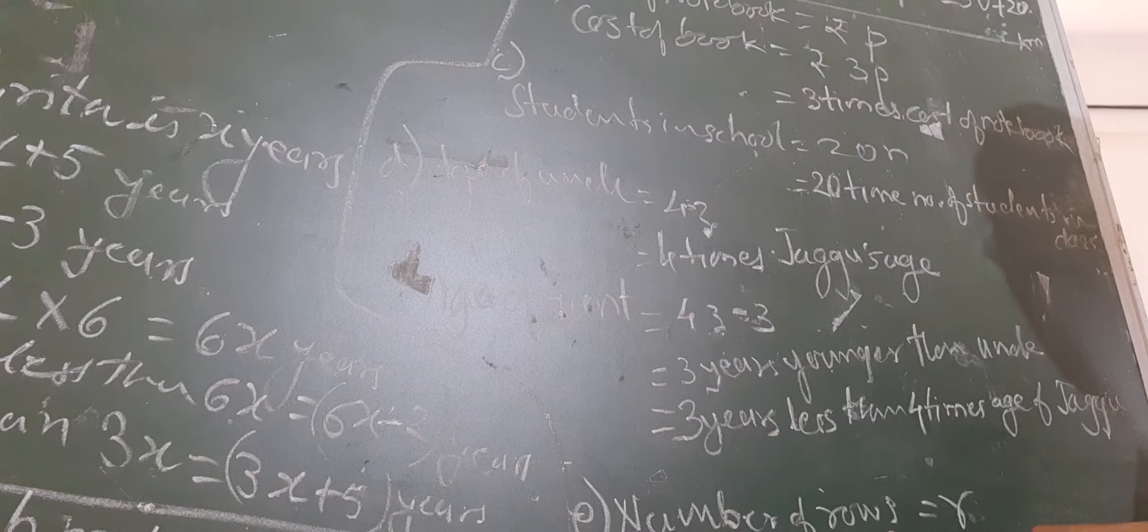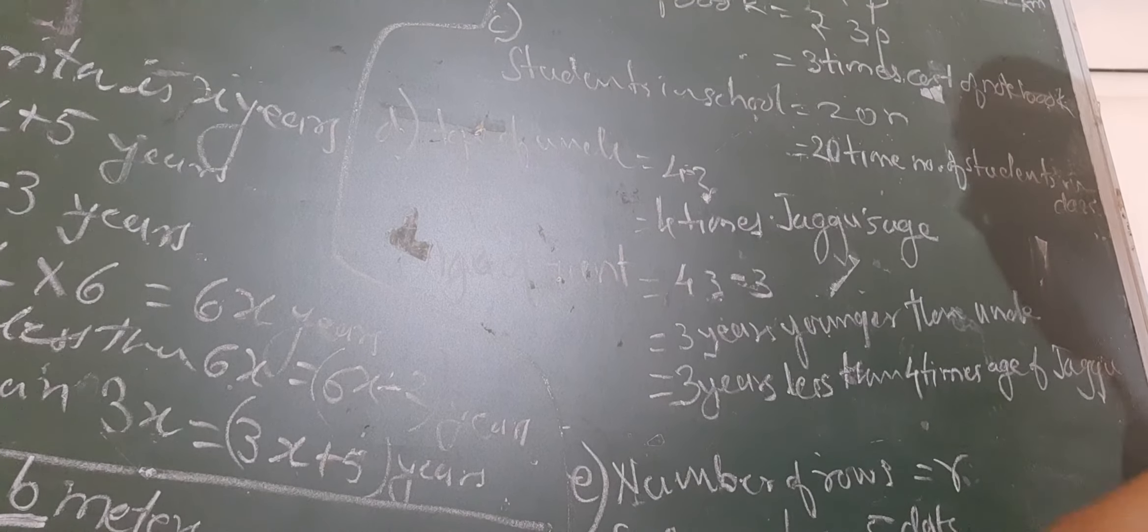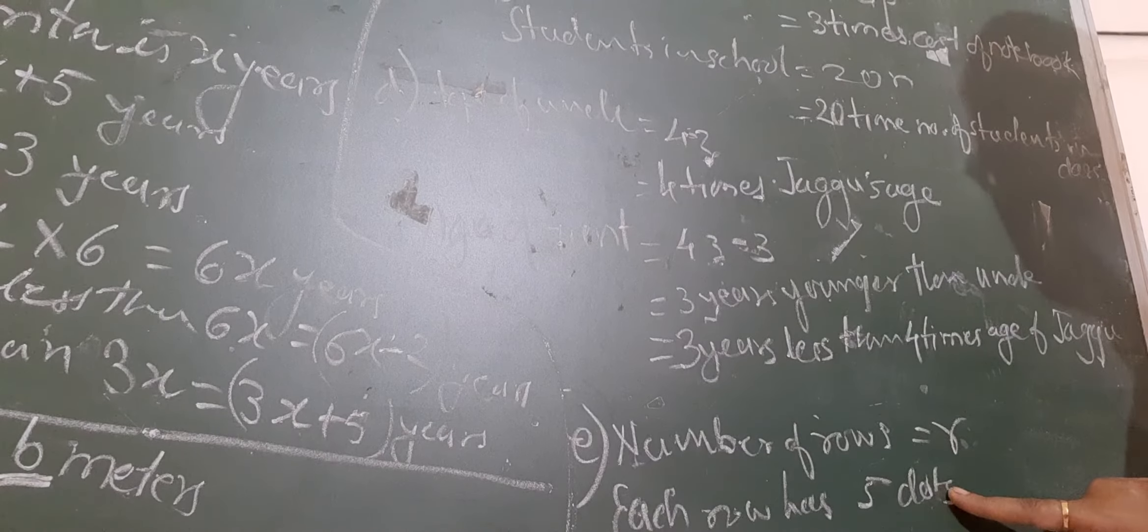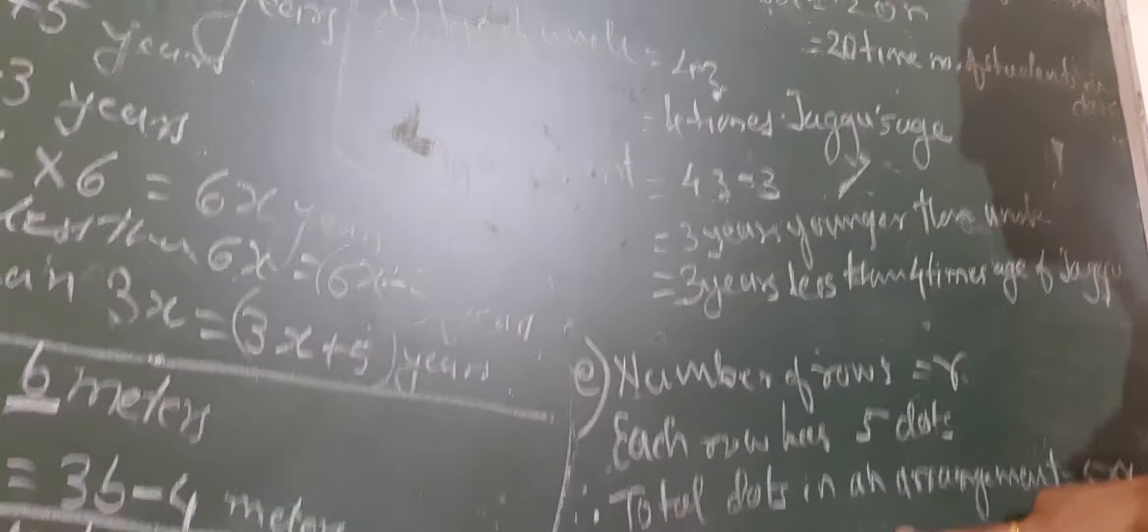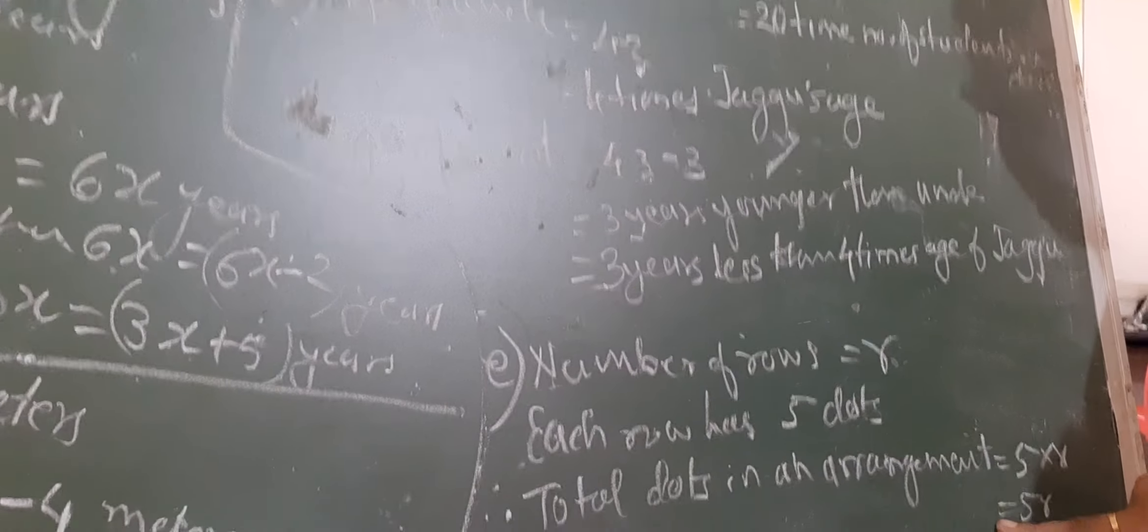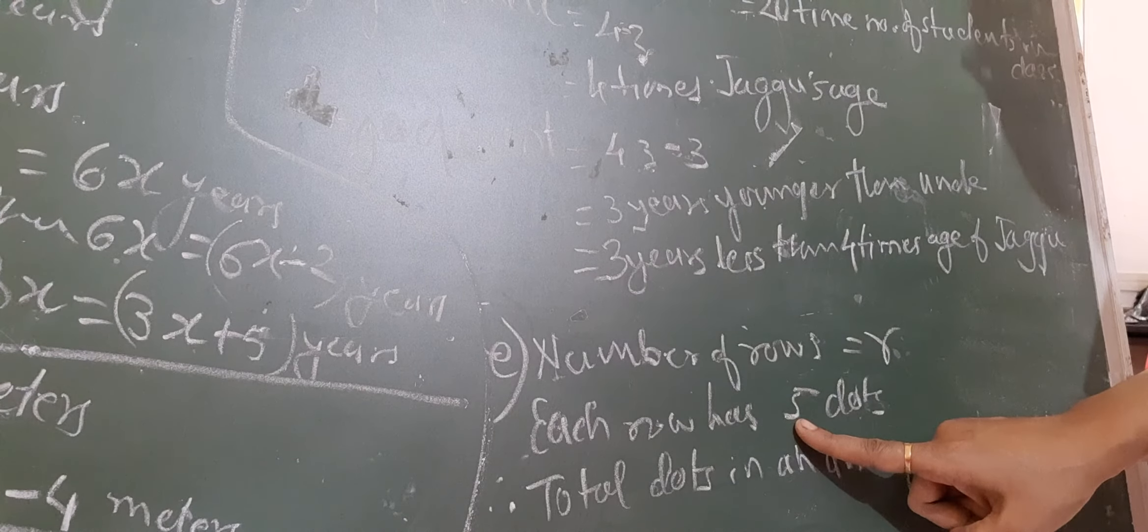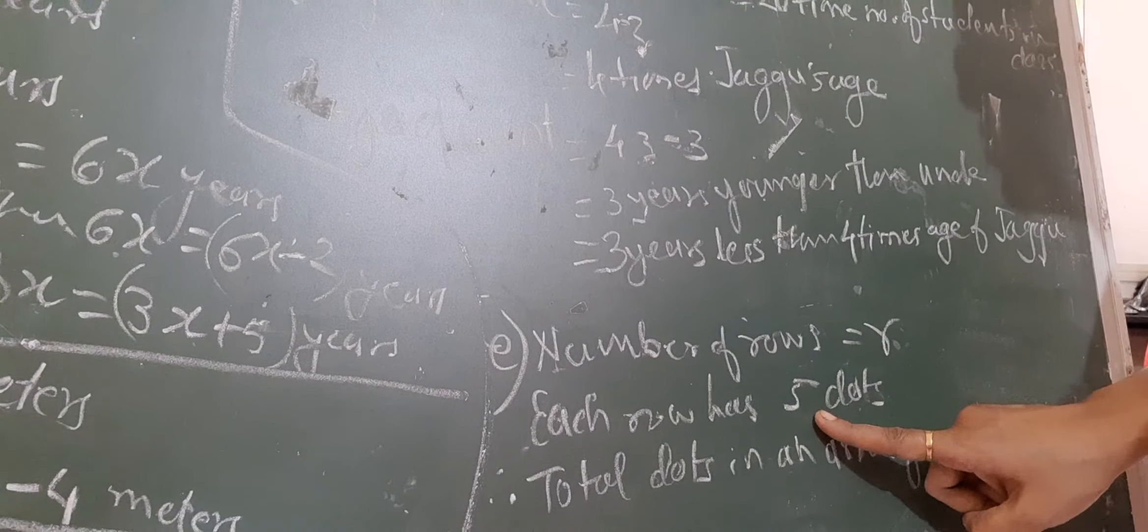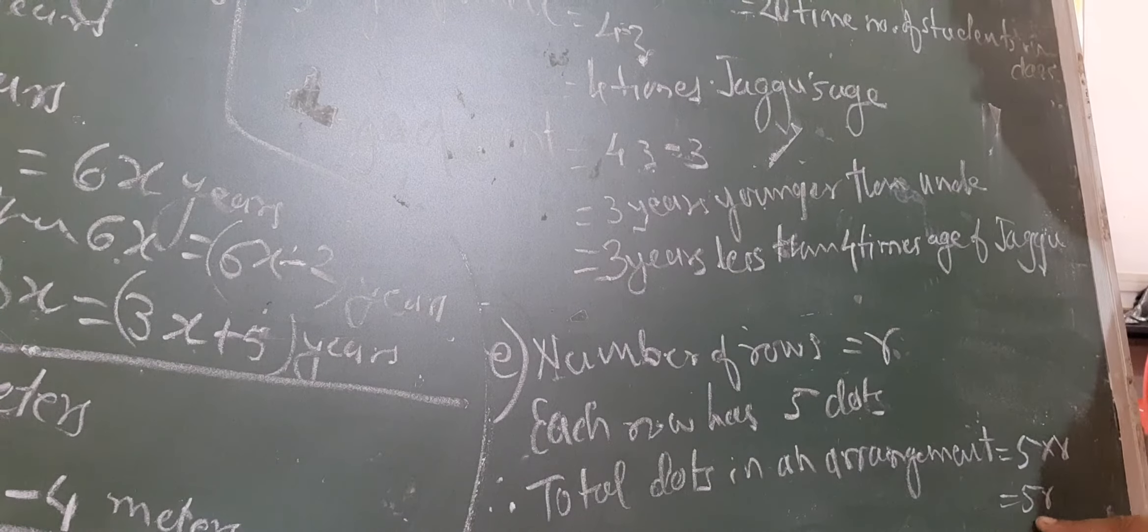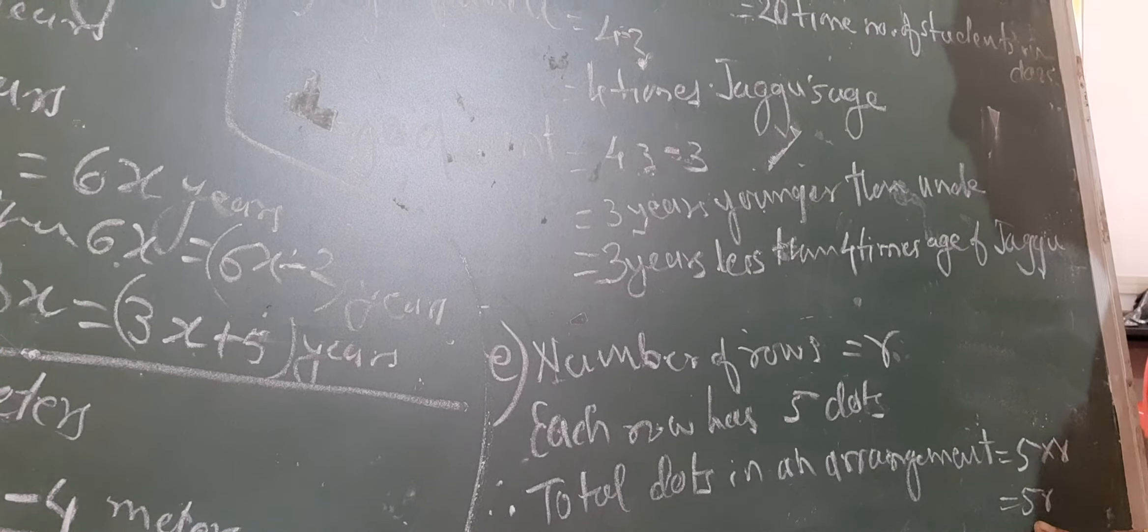Next, number of rows in an arrangement is given R and each row has 5 dots. So total dots in the arrangement will be equal to number of rows multiplied by how many dots in one row. So 5 into R, that will be 5R, will be the total dots in an arrangement.